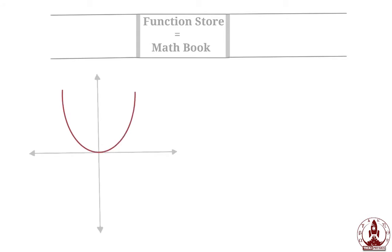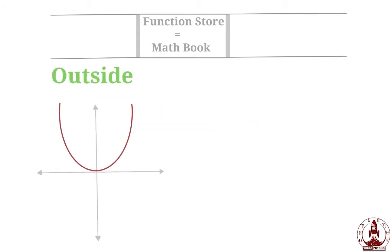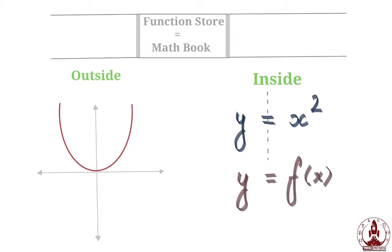The important point to remember, this is how functional lego looks like from outside. But from inside, it is just bunch of Y equals X squared. Or you can also say, it will have one side dedicated to X and another to Y. Do not get scared with it. You don't need to remember these X and Y. They come along when you buy a function from math book.